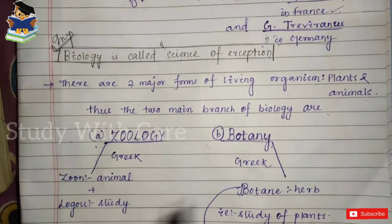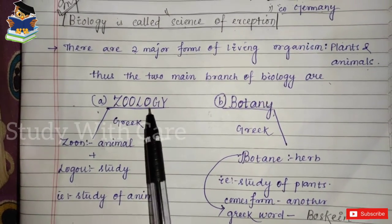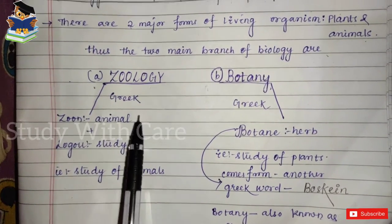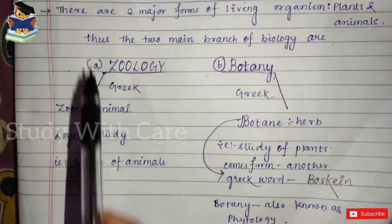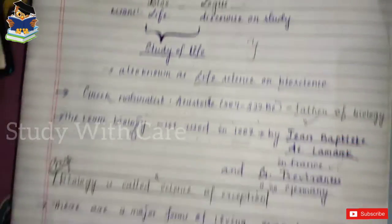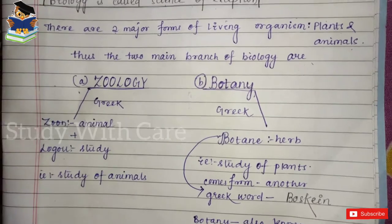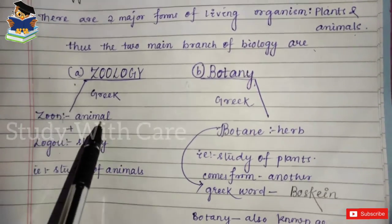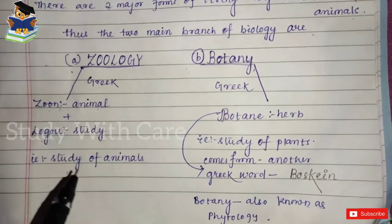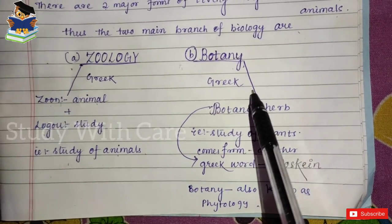There are two major forms of living organisms — plant and animal — and thus two main branches of biology: zoology and botany. Zoology comes from two Greek words, zoo (meaning animal) and logos (meaning study), so zoology is the study of animals.